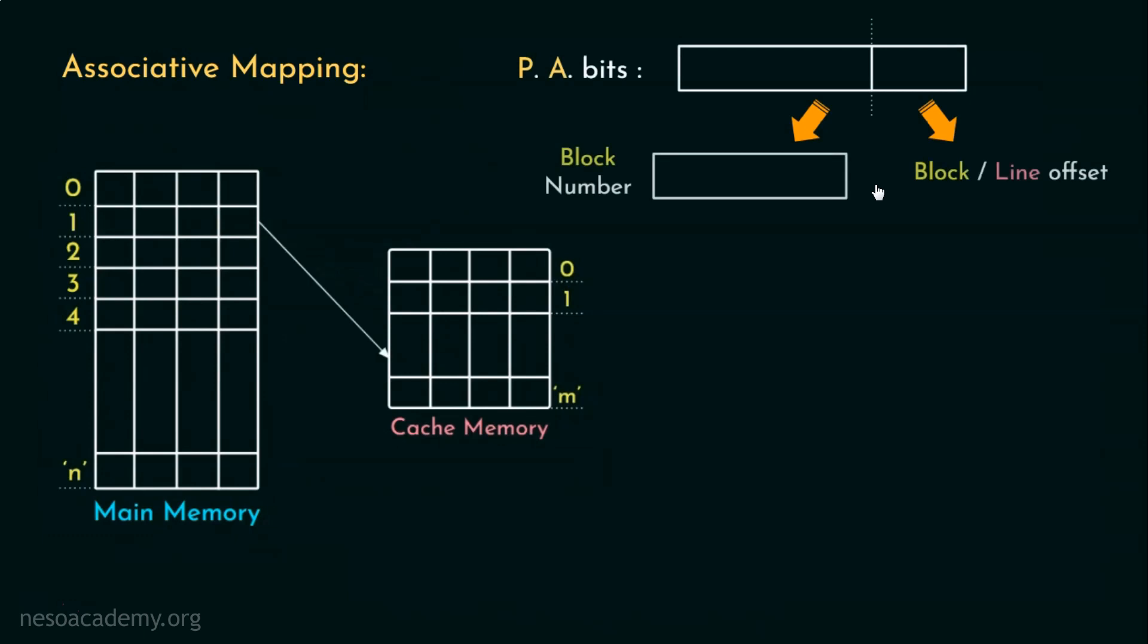the PA bits are split as tag bits and block or line offset. Basically, the entire block number bits are used as tags. That's why it's also called fully associative mapping. That is, the main memory blocks can be associated to any of the cache lines. Also, that is the reason why the PA split doesn't specify any set of bits for the line numbers.